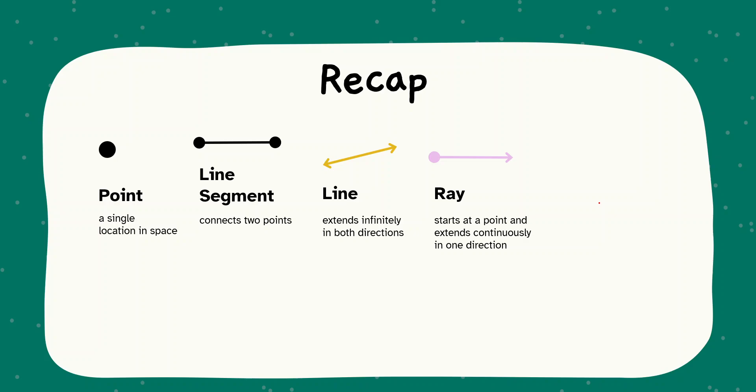Let us recap. A point is a single location in space. What is a line segment? It connects two points. What is a line? It extends infinitely in both directions. What is a ray? A ray starts at a point and extends continuously in one direction.